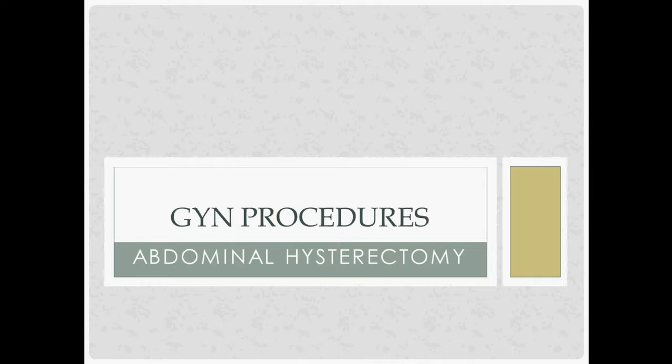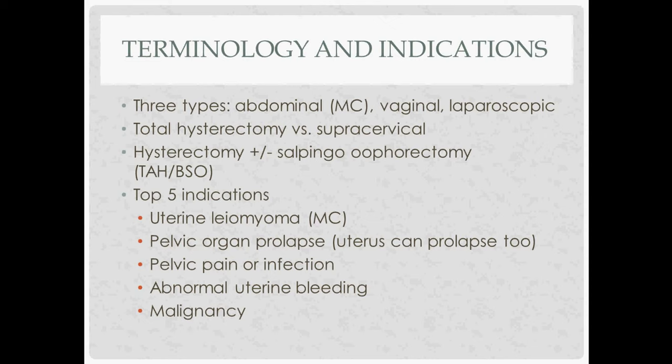This is our summary lecture for abdominal hysterectomy. There are three main ways to do a hysterectomy: abdominal, which is the most common; vaginal, which is fairly rare; and laparoscopic, which is actually fairly common.